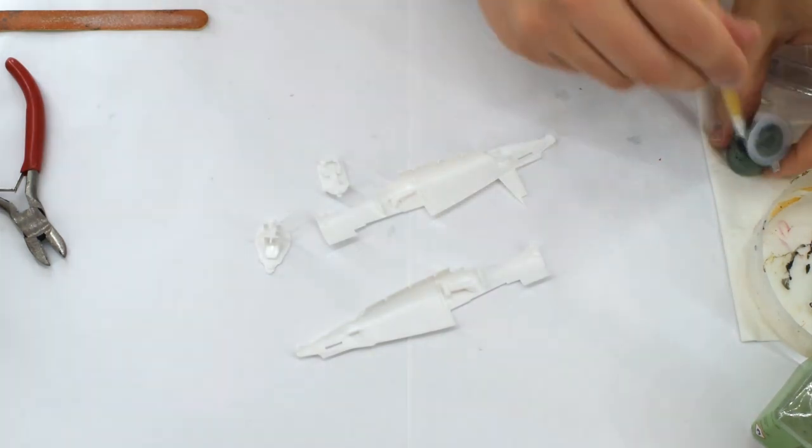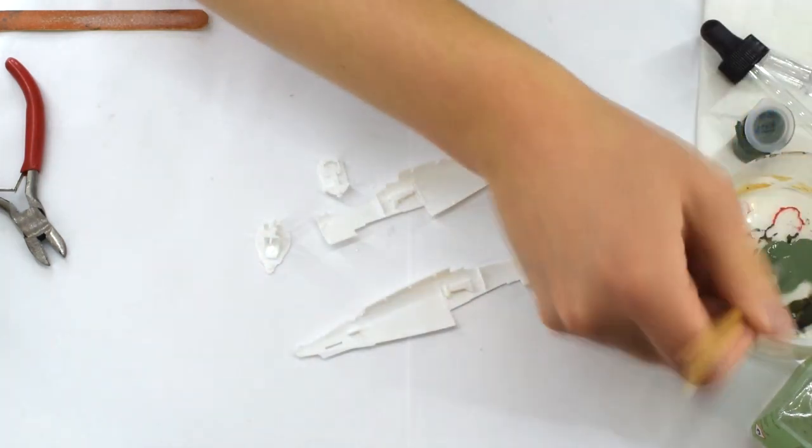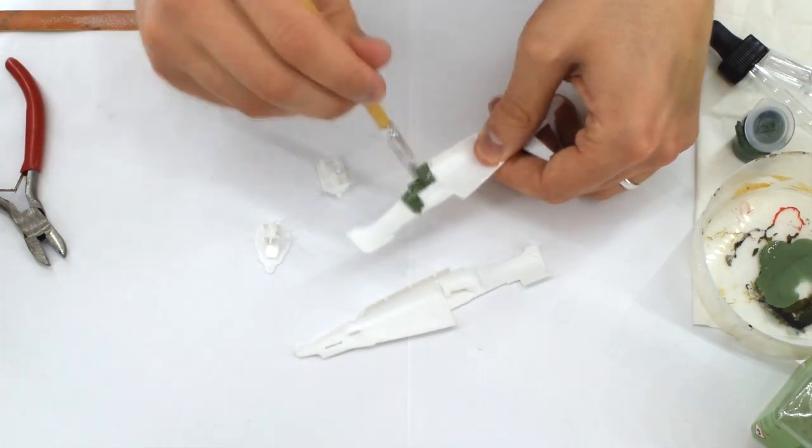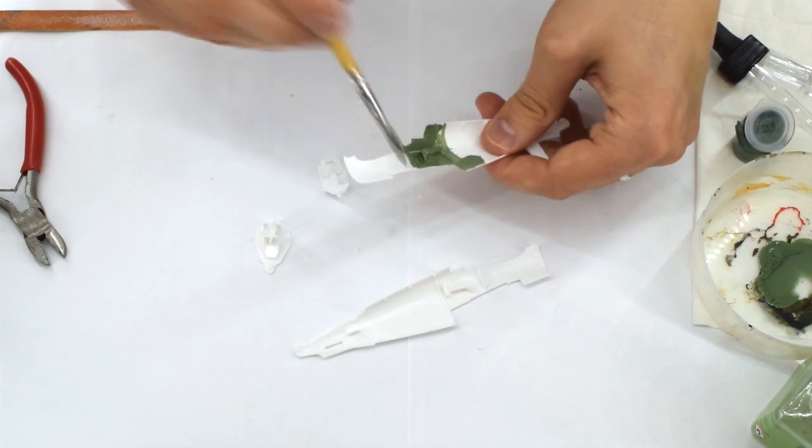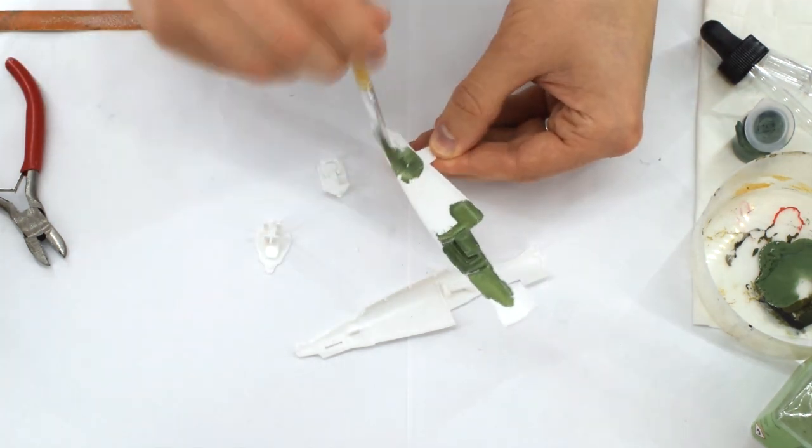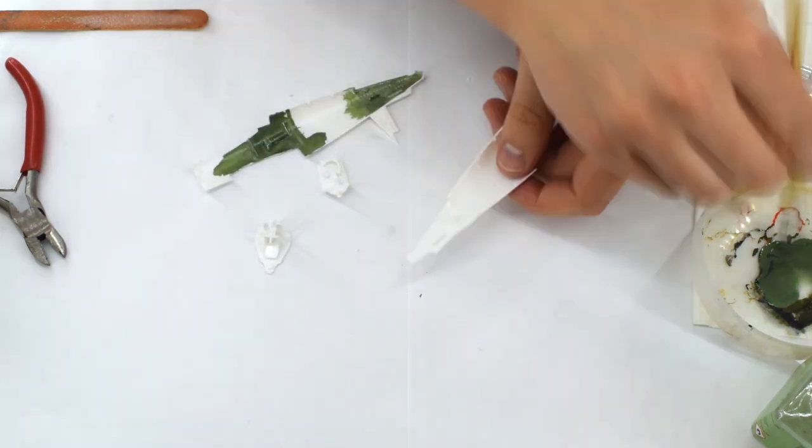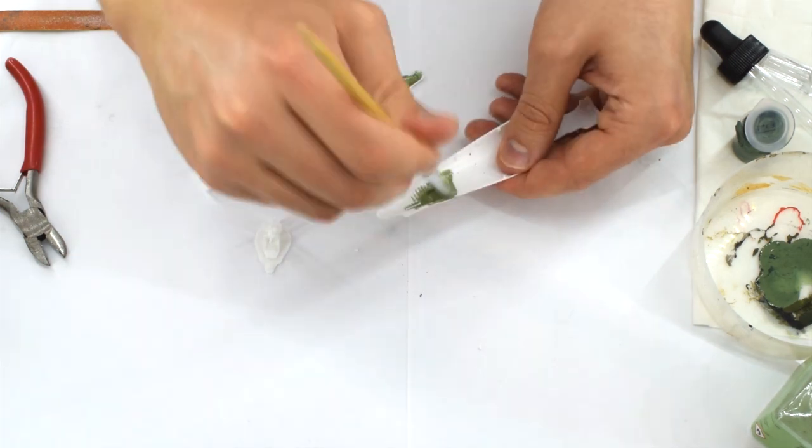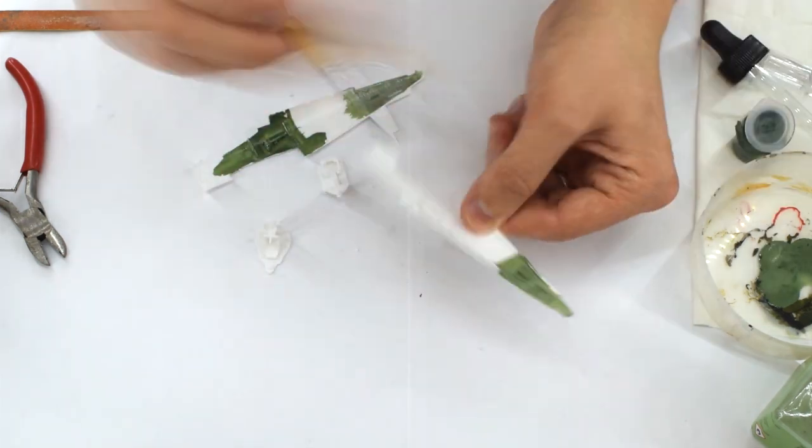Humbrol 78 matte cockpit green acrylic was then thinned with Tamiya acrylic thinner, at a rough ratio of about 2 parts paint to 1 part thinner. This will help it flow over the plastic better, leaving fewer brush strokes when it dries. I painted all of the internal areas of the cockpit and rear wheel well using a medium sized brush to ensure quick and even coverage.